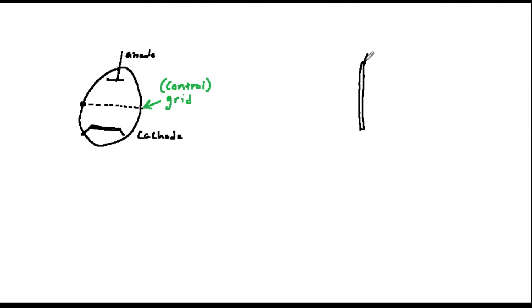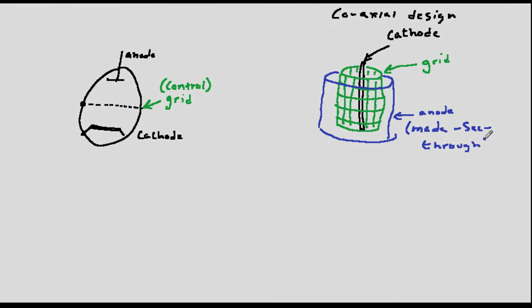In a triode, this is usually simply called the grid, but in multigridded valves, like a tetrode or pentode, it is called the control grid.